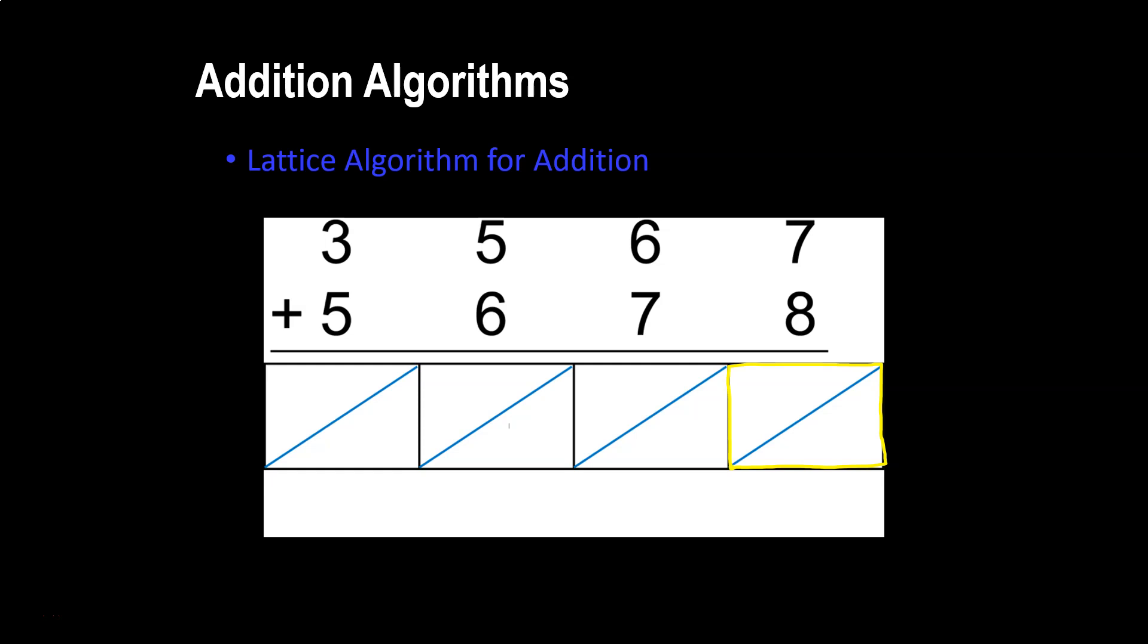Notice that each place value box is cut in half diagonally. The reason for this is because in our base 10 system, when we add two digits together, the most regrouping we could possibly do would be 9 plus 9 equals 18. That is one group of 10 and 8 singles. So when adding two digits together, at the very most, I will have to regroup with a group of 10.